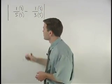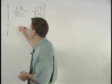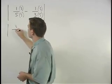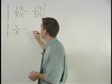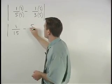So we have the absolute value of three over 15 minus five over 15.